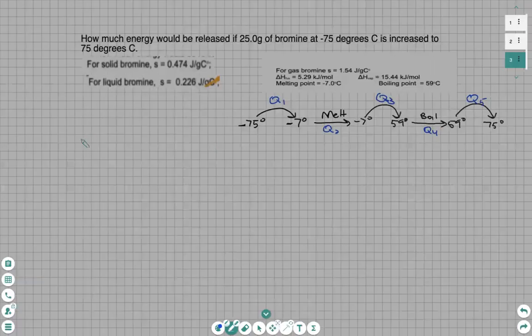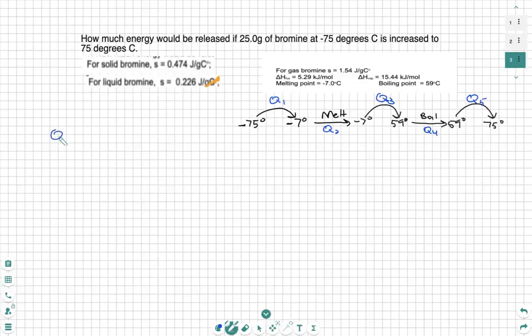So our Q1 is going to be MCΔT, where we have mass times specific heat times delta T, which is change in temperature. So the mass is 25. The specific heat for Q1 is a solid.